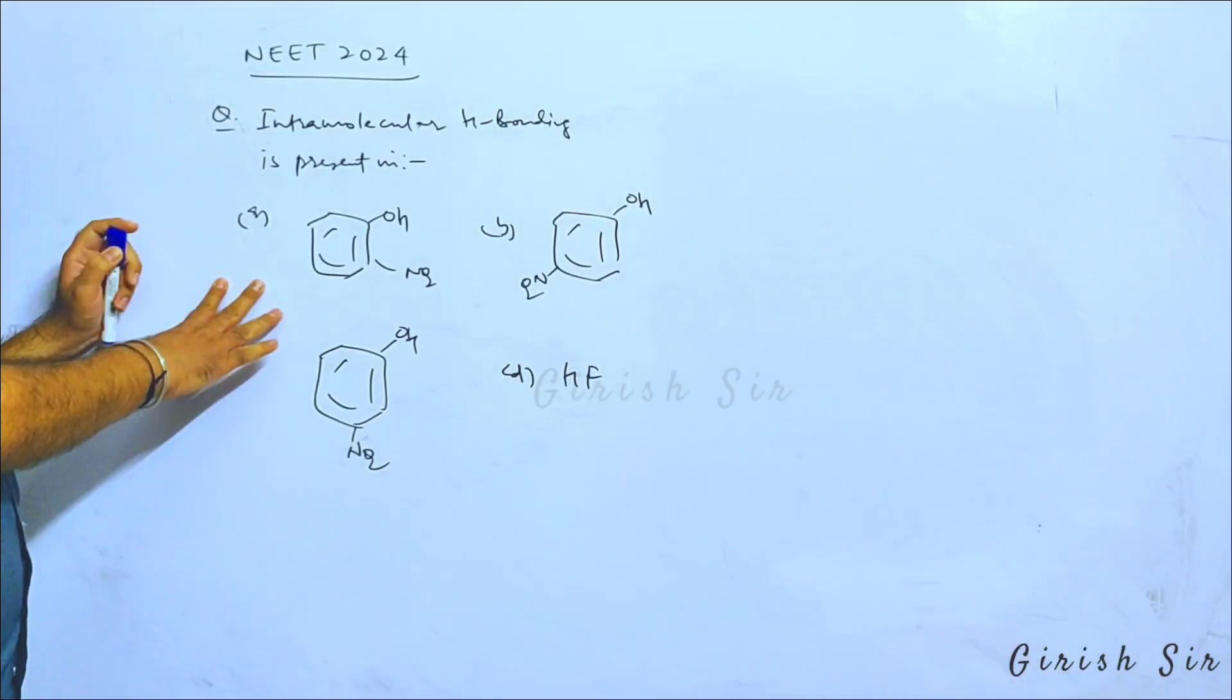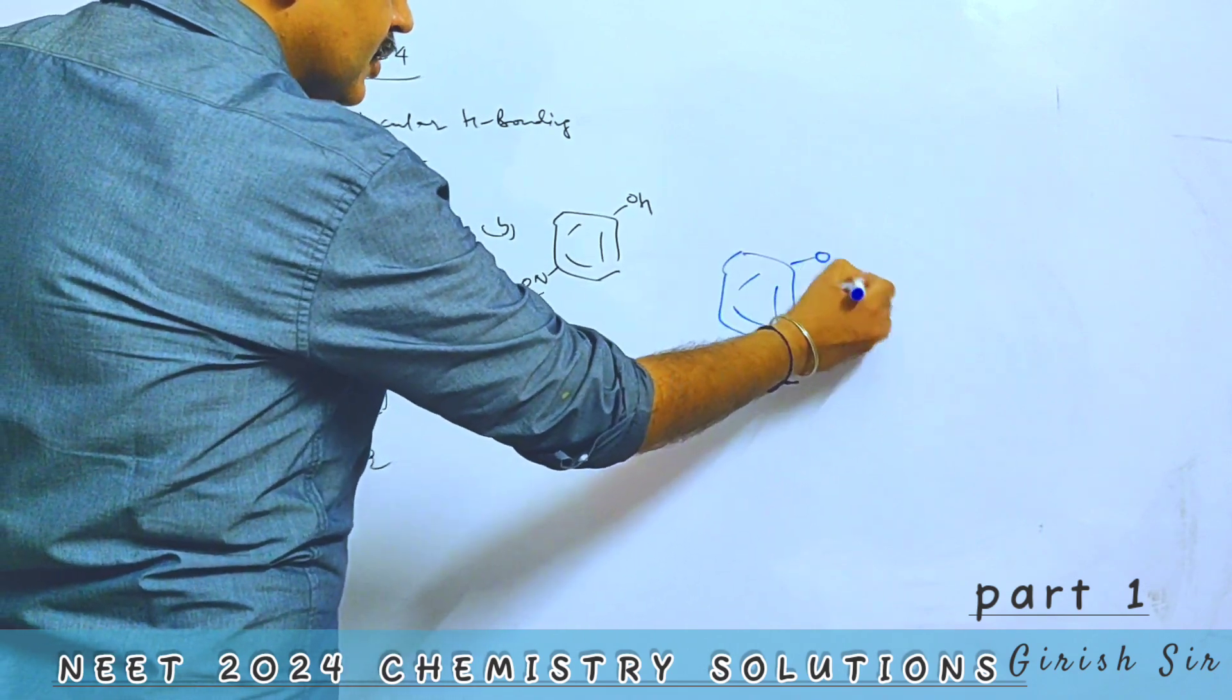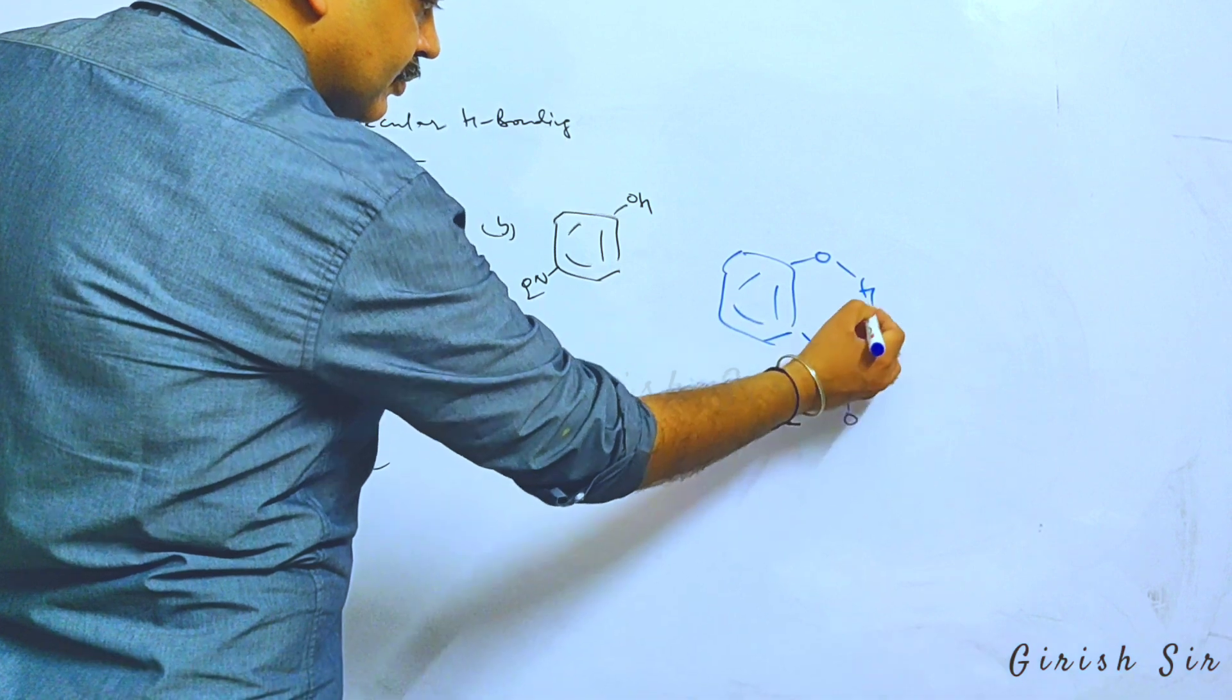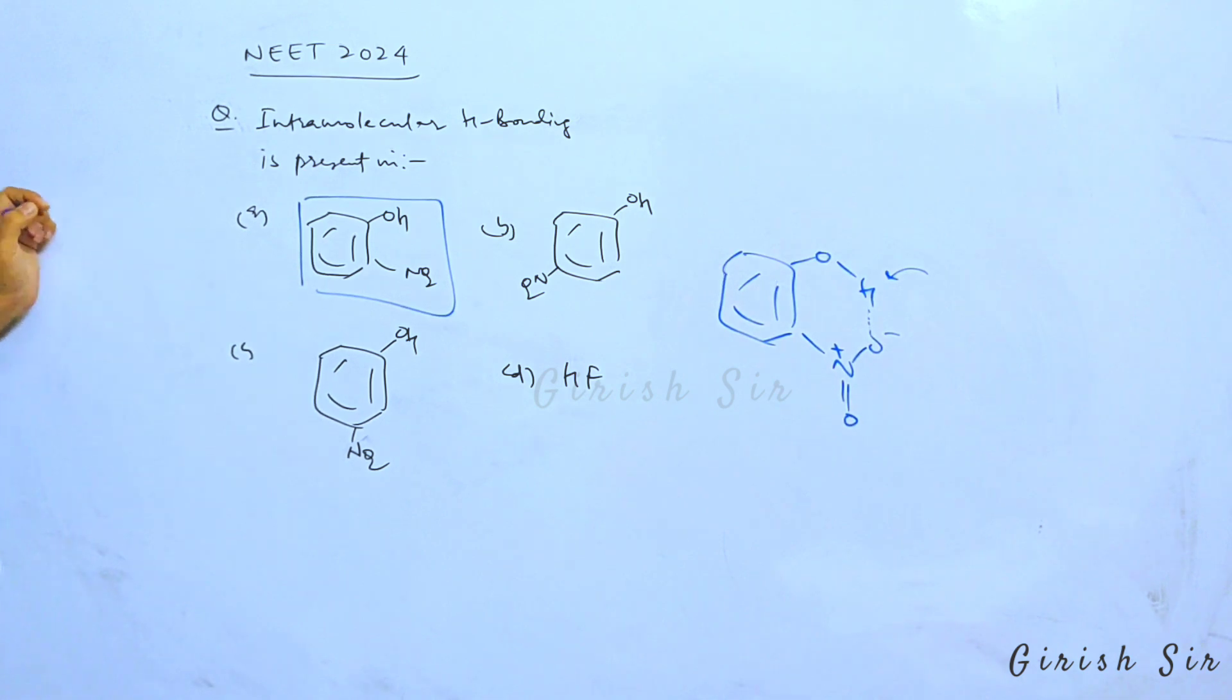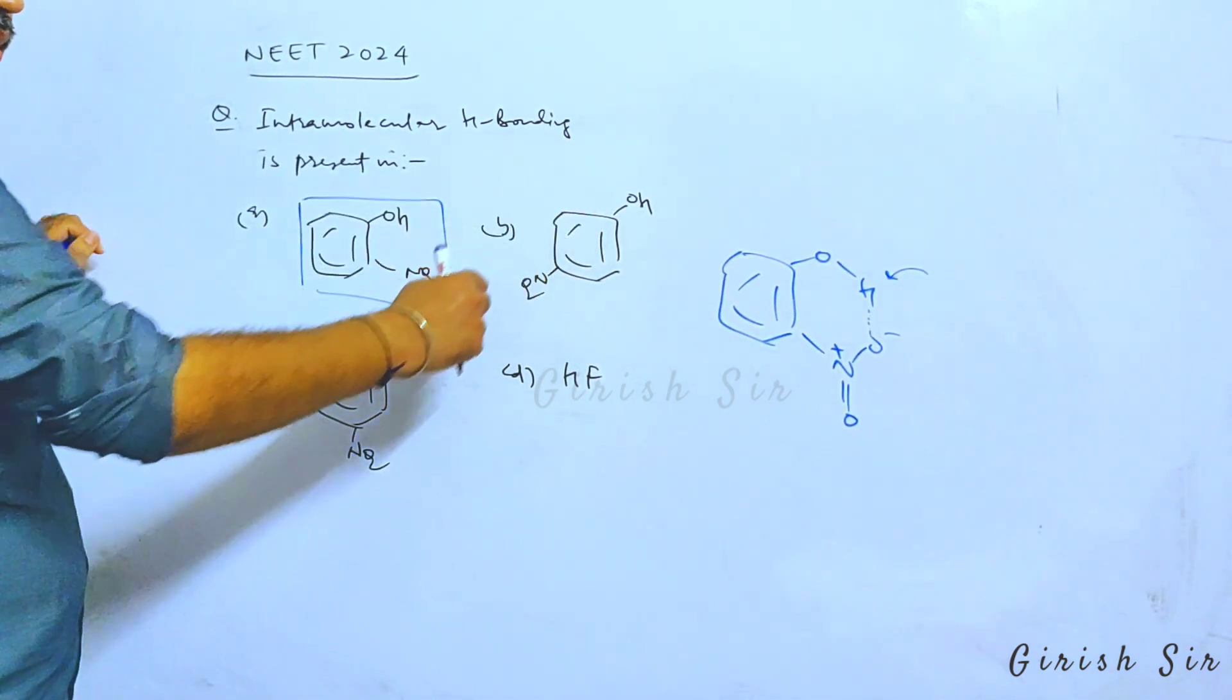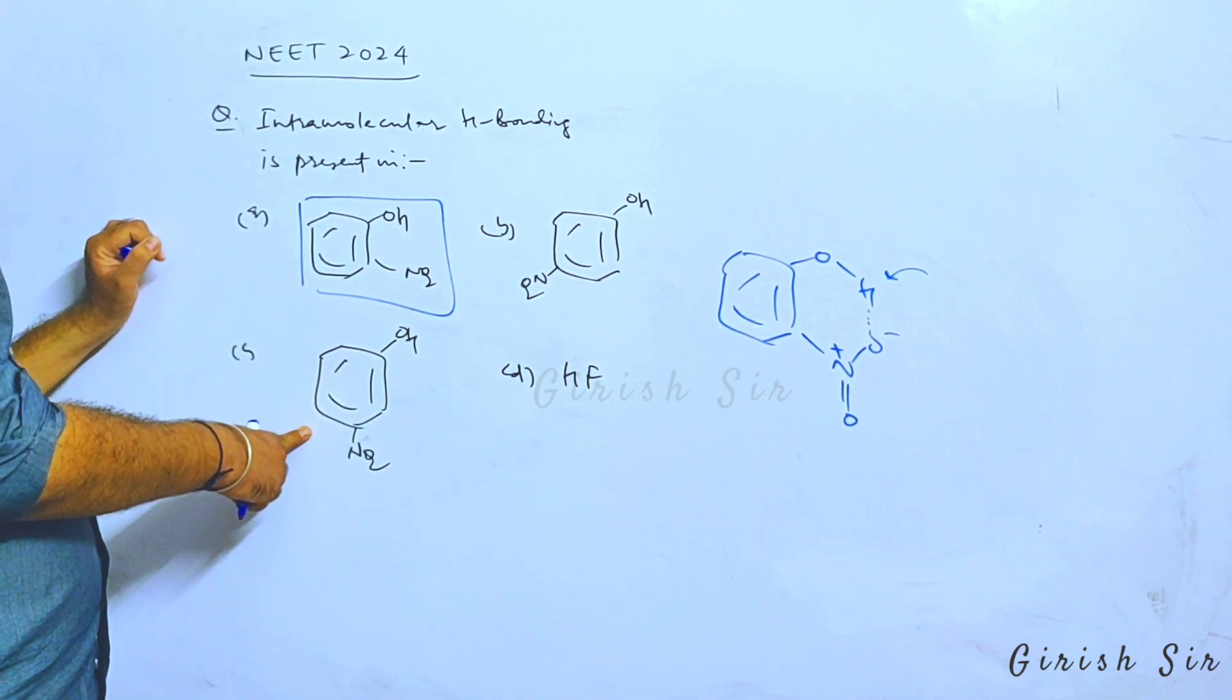See, in this question we have to identify which molecule can show intramolecular H bonding. In option A, which is orthonitrophenol, see this is how the structure is. Here intramolecular H bonding is possible, whereas in the remaining option, paranitrophenol, the groups are too far for intramolecular H bonding to take place. So it can show only intermolecular H bonding. The same is true for the meta isomer.